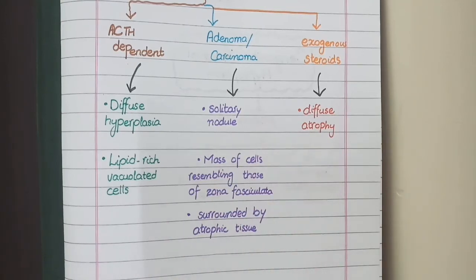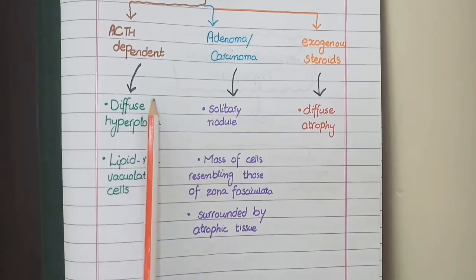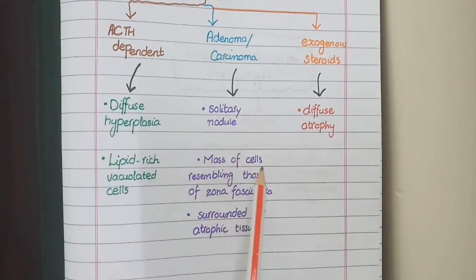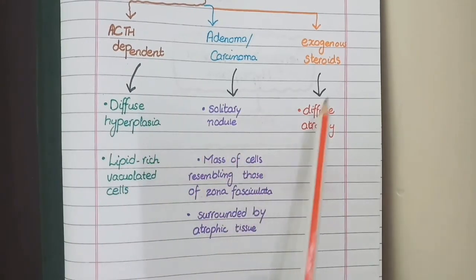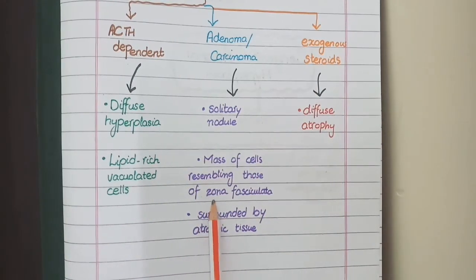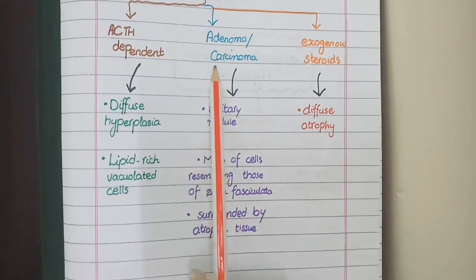To summarize: if you see diffuse hyperplasia, it is ACTH-dependent Cushing syndrome. If you see diffuse atrophy, it is due to exogenous steroids. And if you see a mass of cells or tumor surrounded by a zone of atrophy, it is an adenoma or a carcinoma.